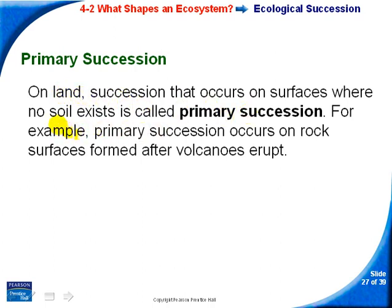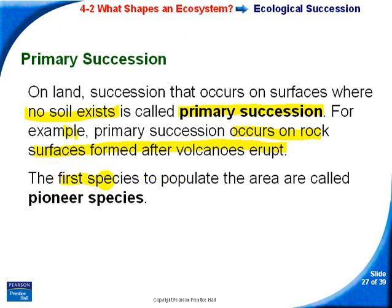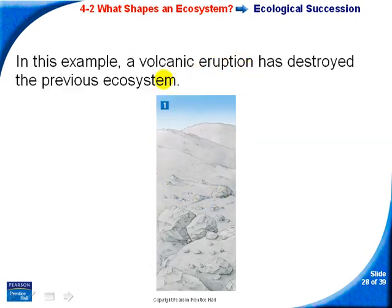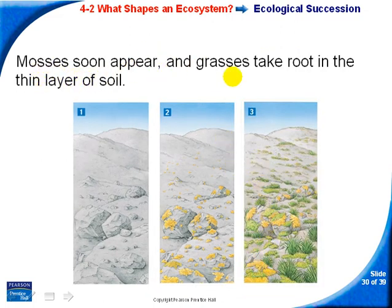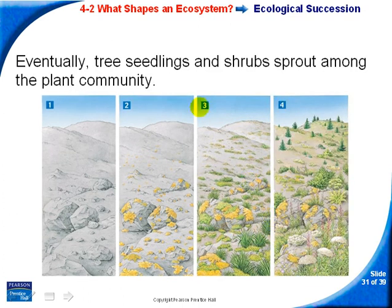Primary succession occurs when there is no soil and life must form from scratch, often on bare rock surfaces after volcanic eruptions. The first species to populate the area are called pioneer species. For example, after a volcanic eruption destroys an ecosystem, lichens appear first as pioneer species, then mosses, then grasses. Over time, soil develops from the breakdown of rock, and eventually grasses are replaced by small trees and shrubs.